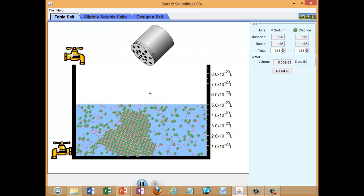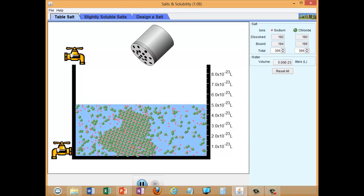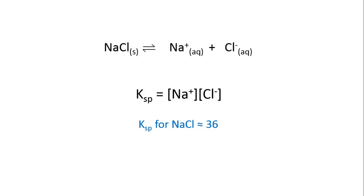This is the point at which equilibrium has been established: when the concentration of the dissolved ions is no longer changing. The equilibrium is sodium chloride solid in equilibrium with aqueous sodium and chloride ions. The K_sp expression is: K_sp equals concentration of sodium ions times concentration of chloride ions. The solid sodium chloride doesn't appear because it's constant — the concentration of a solid doesn't change. Its amount might change, but its concentration never does, so it doesn't affect the rates of the forward and reverse reactions or the position of equilibrium.